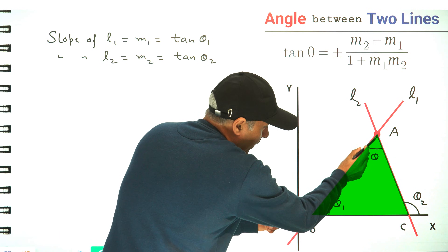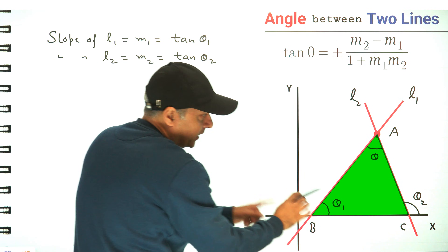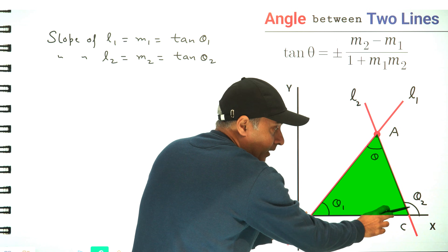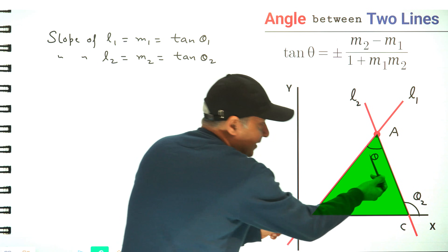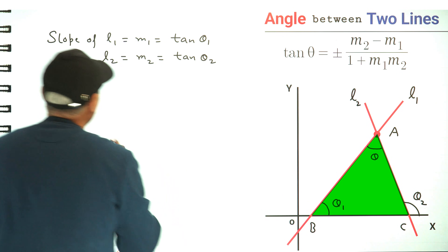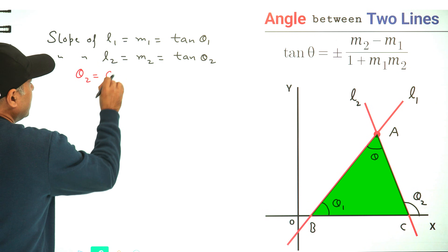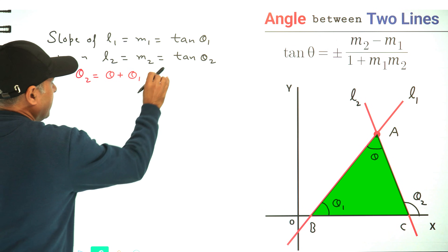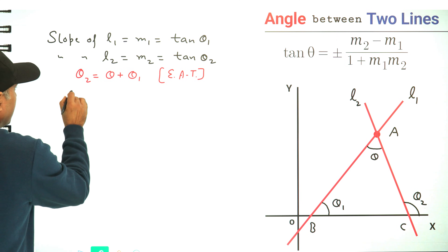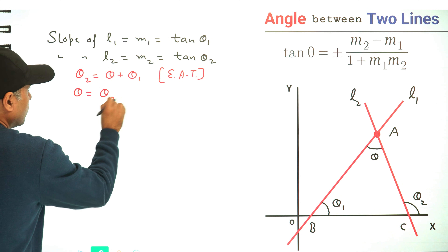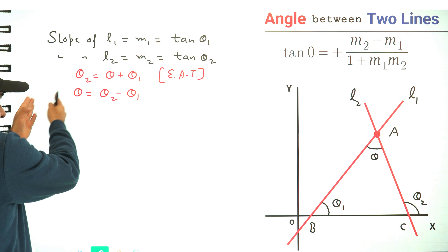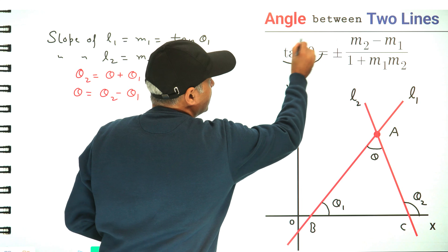Now let's focus on triangle ABC. We can see that theta 2 is its exterior angle, and the exterior angle of a triangle is always equal to the sum of the two opposite interior angles. So we can write theta 2 equals theta plus theta 1 by the exterior angle theorem. Taking theta to the left hand side gives theta equals theta 2 minus theta 1, because we need to find the value of tan theta.